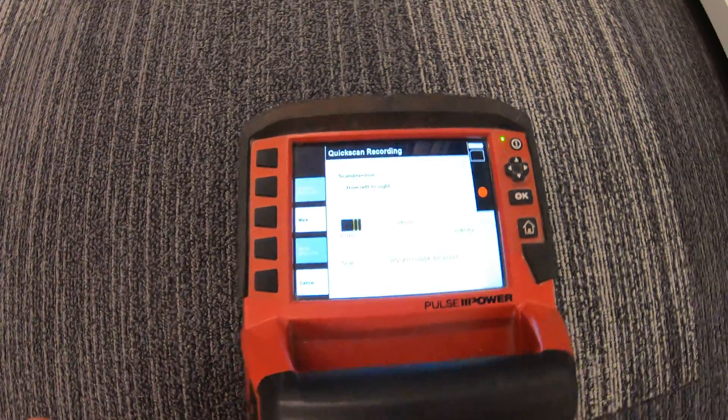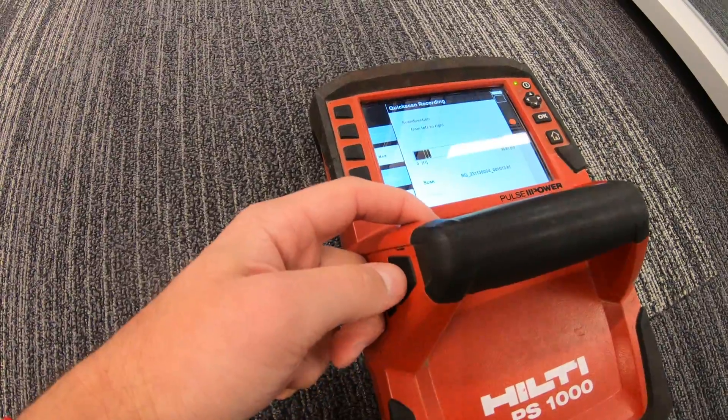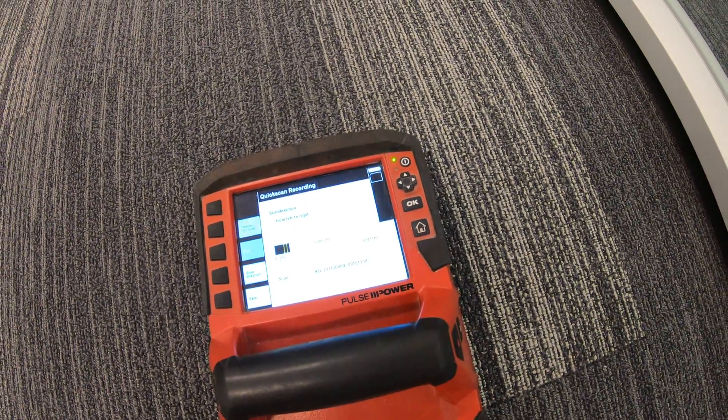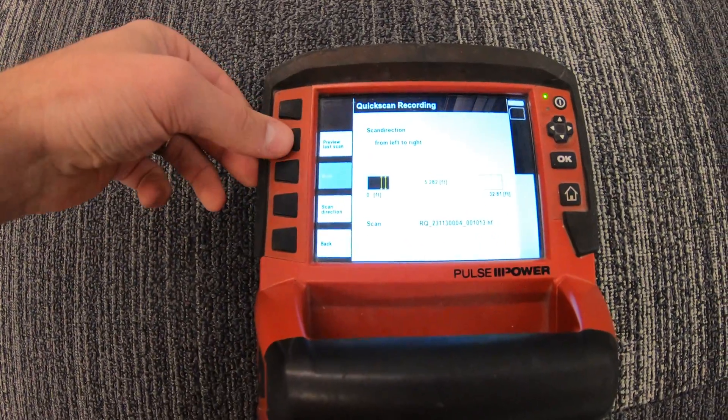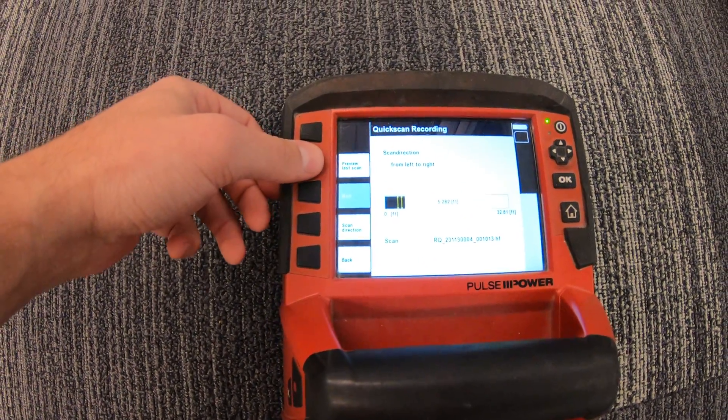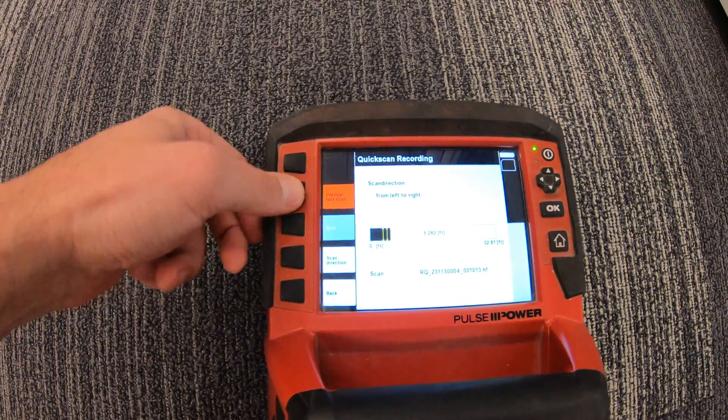So let me go ahead and press my record button one last time to end the scan. It's going to load it up, and I'm going to bring this up onto the table in a second. So now I can preview my last scan, or I can just go to the projects menu and look at it. So I'll go ahead and preview the last thing I did.